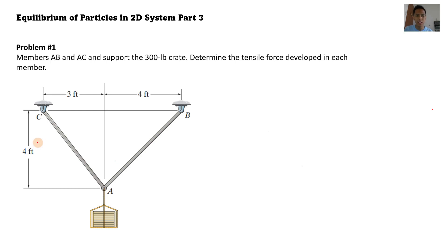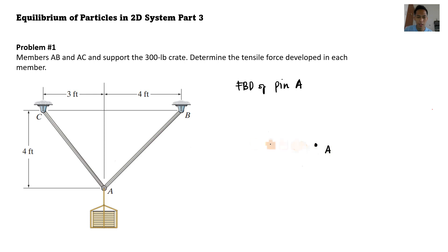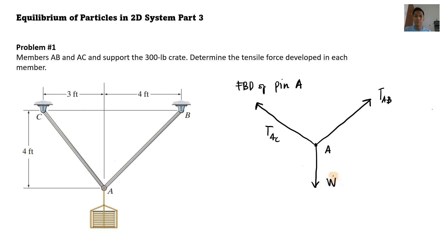Let's solve this first problem: members AB and AC support a 300-pound crate — determine the tensile force developed in each member. The first step is to make a free body diagram representing each force on the system. So we have the FBD of pin A, and the forces acting on that pin are the forces in members AB and AC, plus the weight of the crate acting downward.